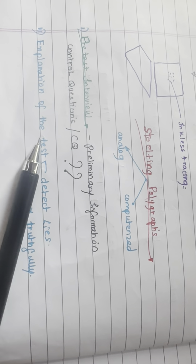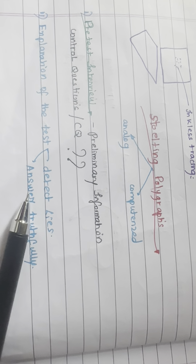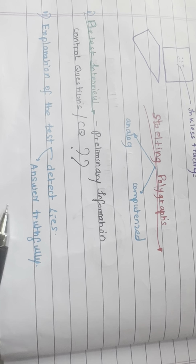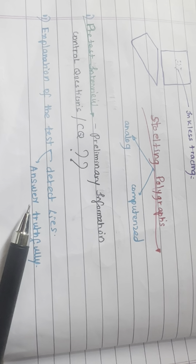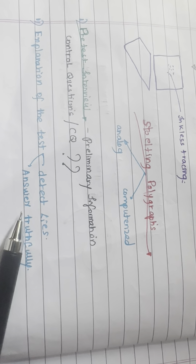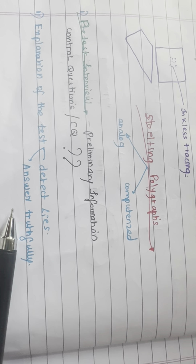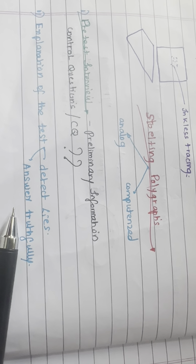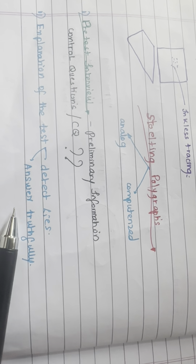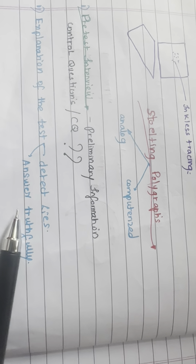Next is the explanation of the test. The test explains how the polygraph is supposed to work, emphasizing that it can detect lies and that it is important to answer truthfully.